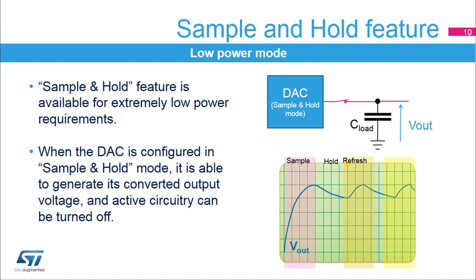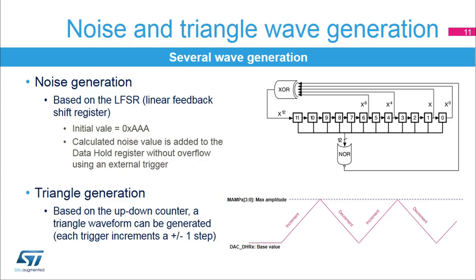The duty cycle program is very flexible and autonomous. The DAC digital interface integrates two special signal generators. The linear feedback shift register (LFSR) can create the noise signal for the DAC input, and each trigger updates the DAC output data by an LFSR block.